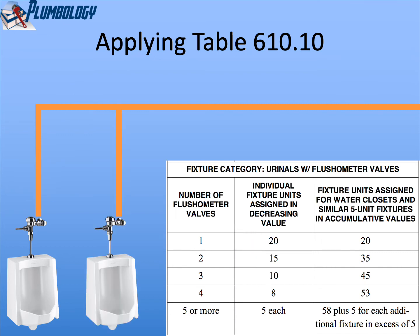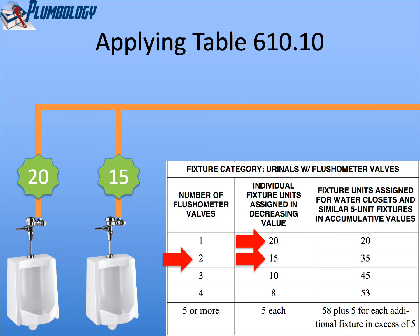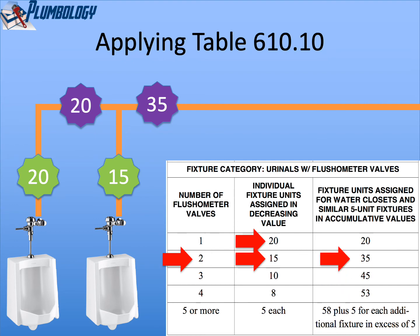If we have two urinal flush valves, finding two on table 610.10, the most remote will be 20 and the second most remote will be 15. We label those flush valves 20 and 15, then give values to the pipe segments: 20 plus 15 equals 35. The table agrees — the cumulative values for two flush valves serving urinals would be 35 fixture units, and we size the branch for 35 water supply fixture units.